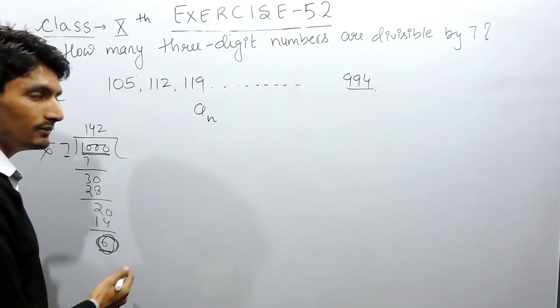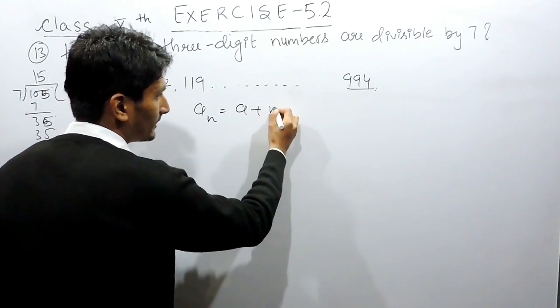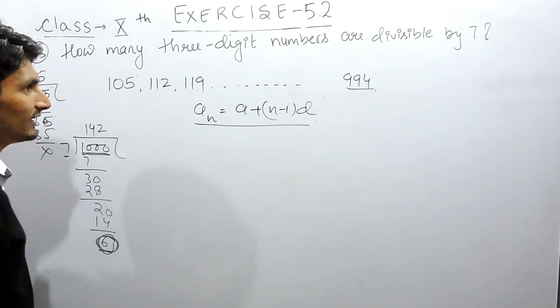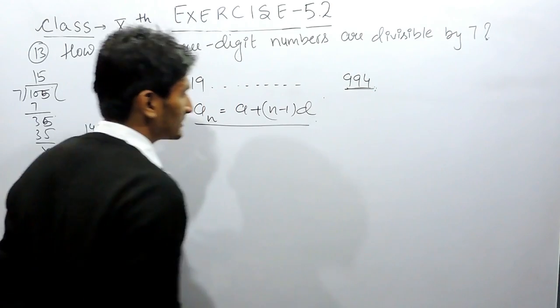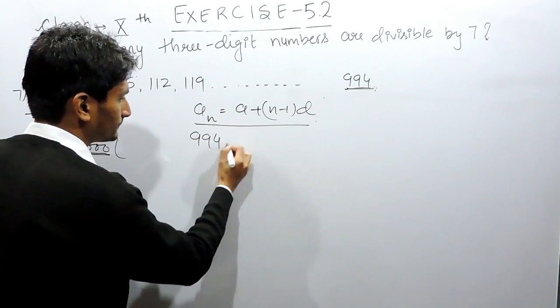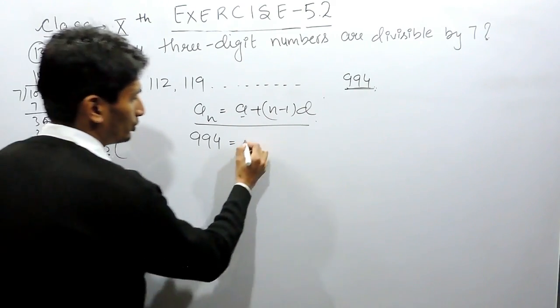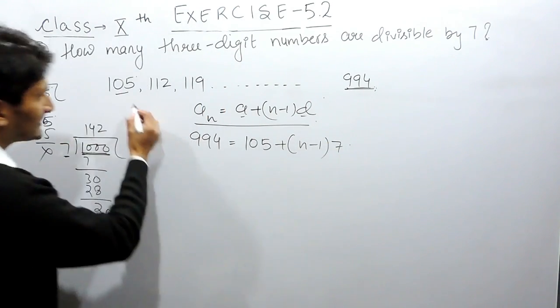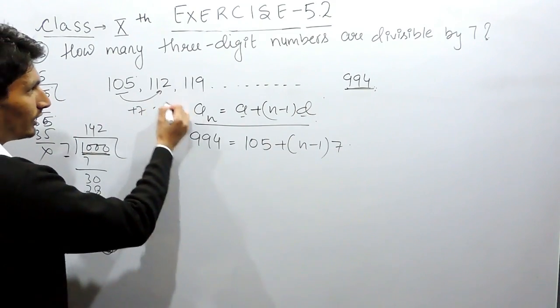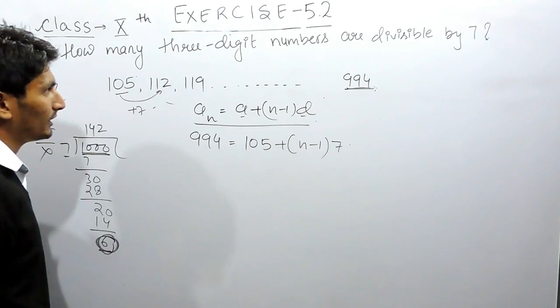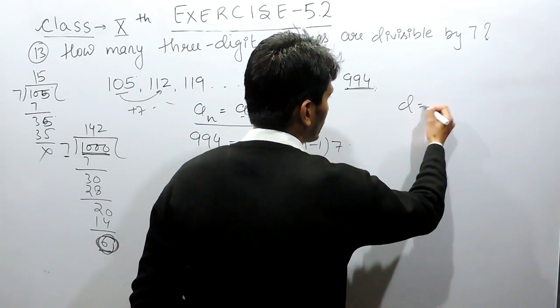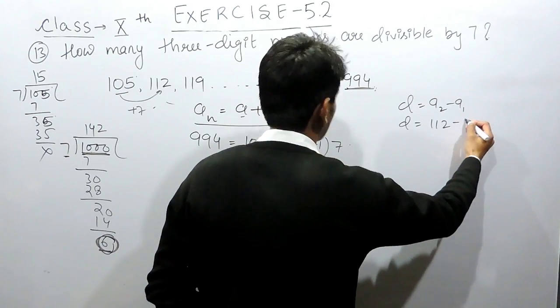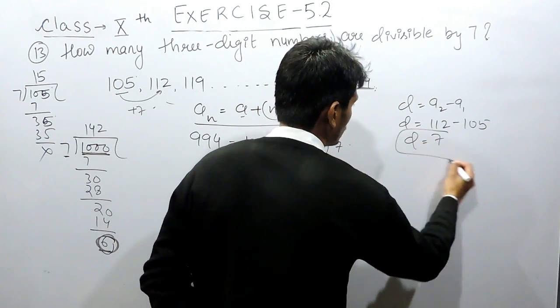How to find its nth term? For that we have a formula: a plus (n minus 1) into d. The nth term in this case, which is the last term, is given as 994. The first term in this AP is 105. The number of terms you have to find out, and the common difference is 7 because you are adding 7. Or, if you want to find the common difference, subtract the first term from the second term. So 112 minus 105 equals 7.